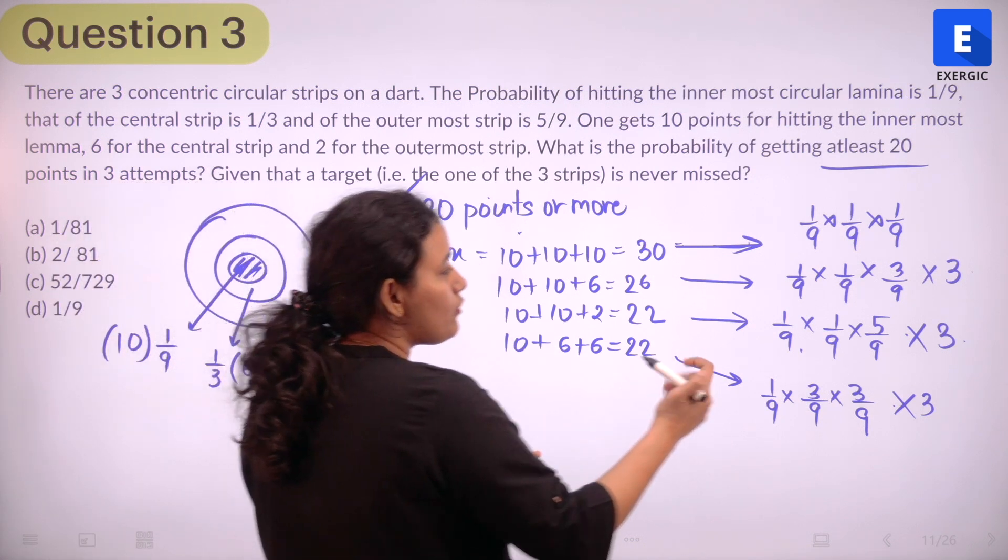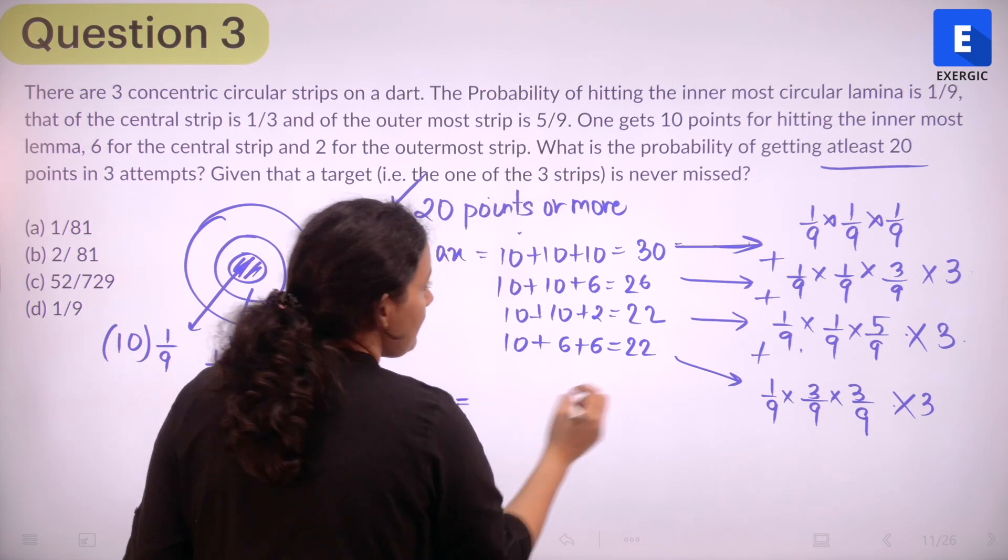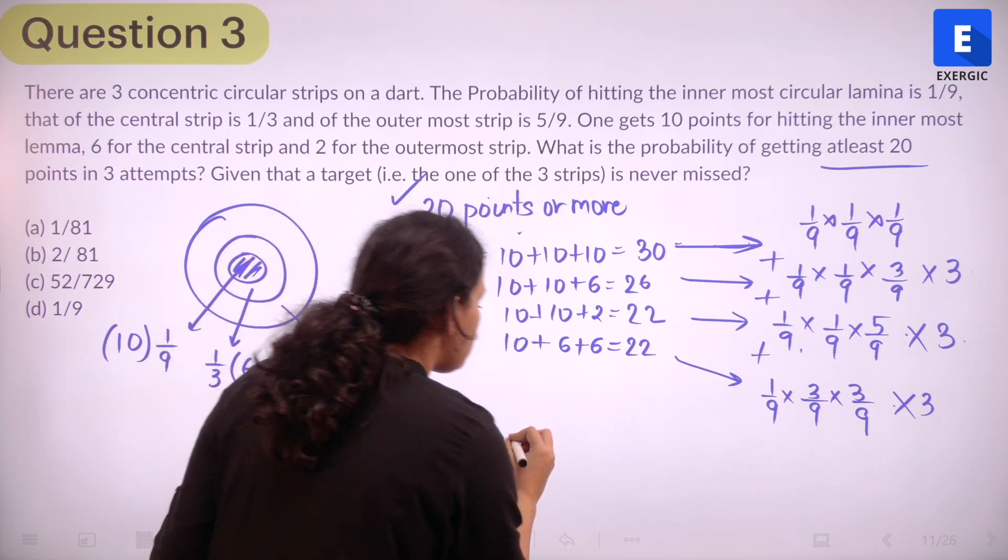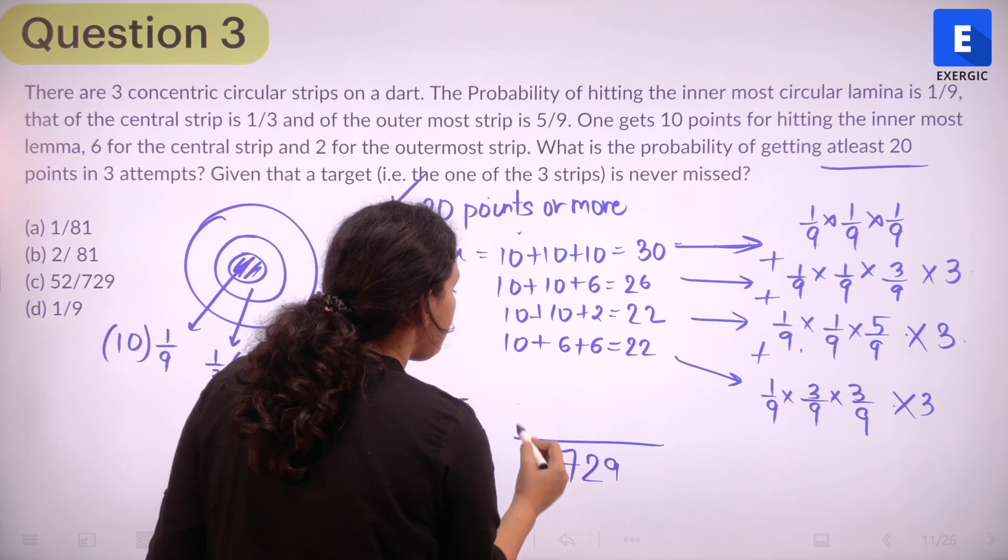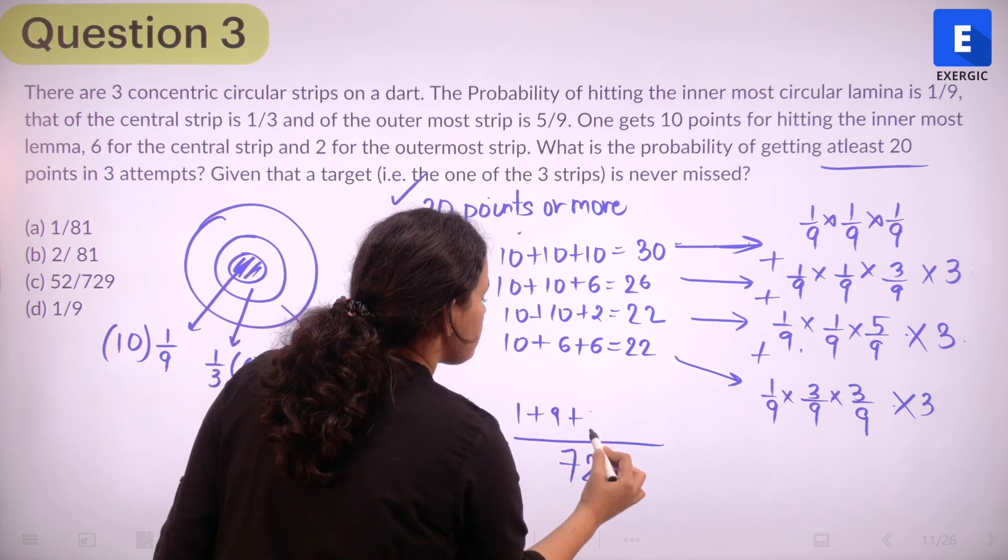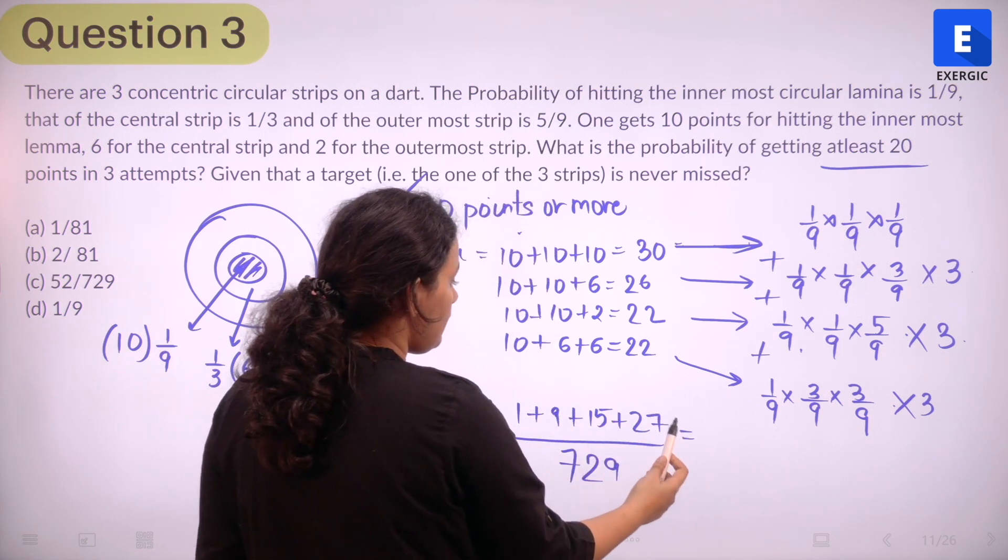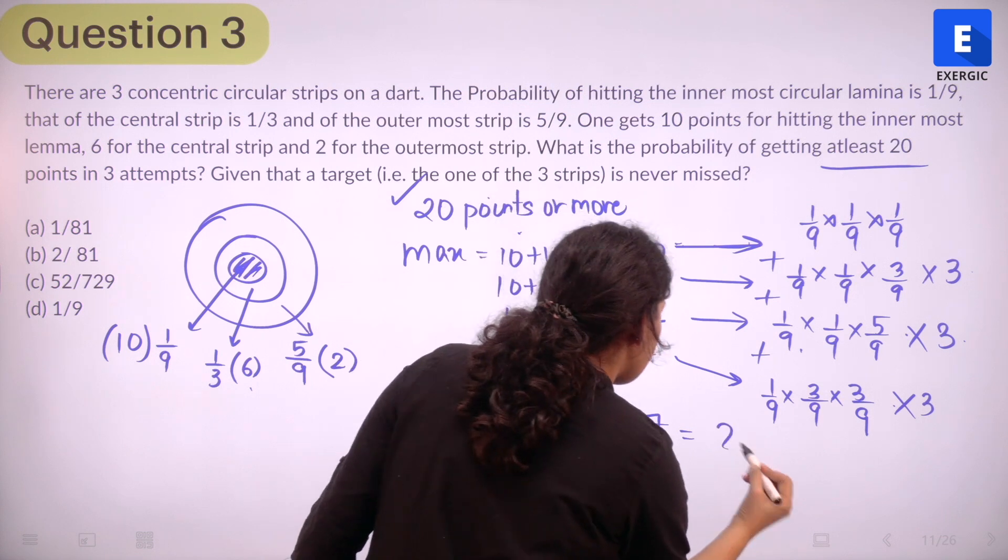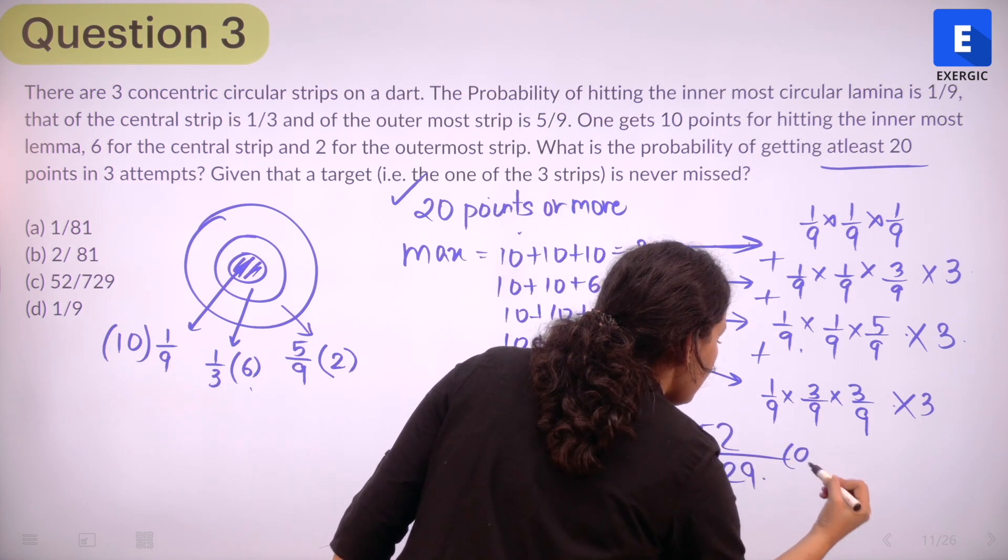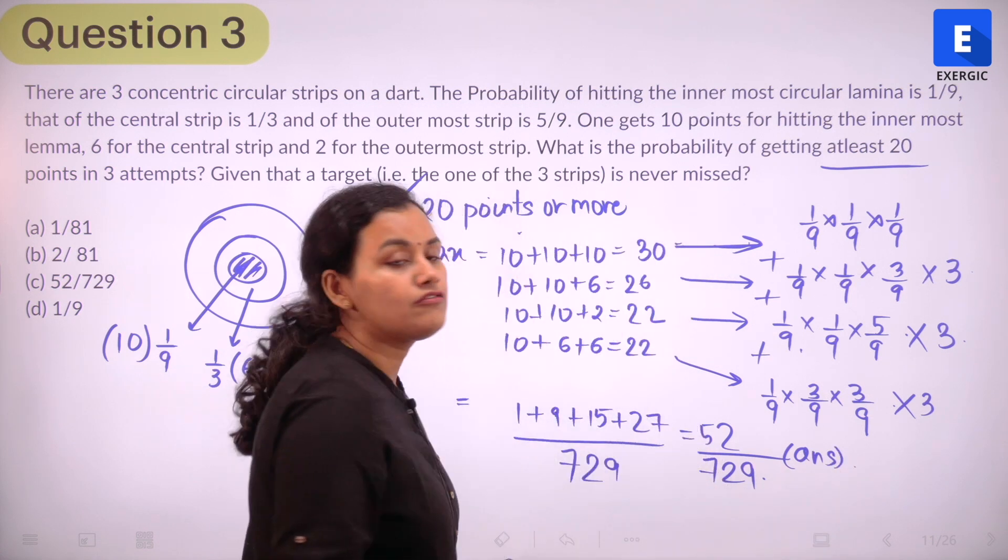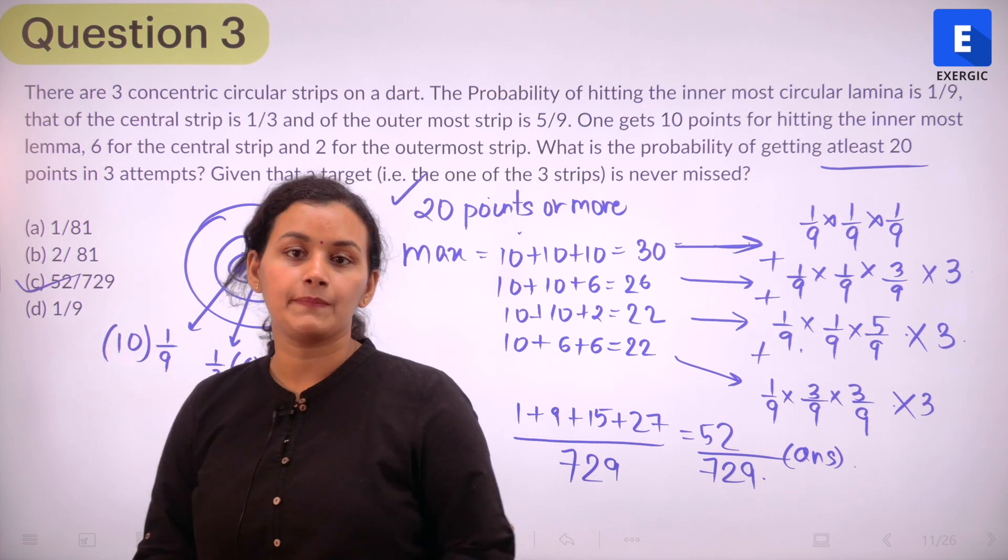So this is what is going to be my final probability. So now if I just add them up, we are going to add them because it's an or question. If I add them up, my denominator is 9 into 9 into 9. So let it be 729. First case, it's 1 plus 9 plus 15 plus 27. So this is 10, 37 and 52. So 52 upon 729 and this is going to be the final answer. And the answer is option number C.